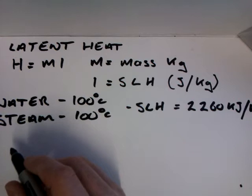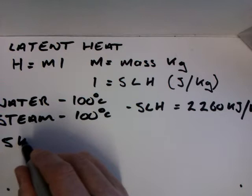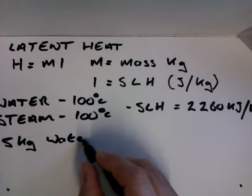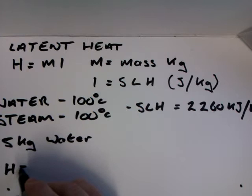That means if we have 5 kilograms of water, we have H equals M, which is mass.